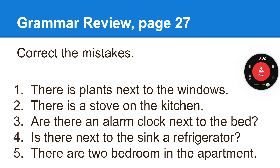'Are there an alarm clock next to the bed?' An alarm clock means there's one of them. Note 'an' — A-N is used when you're talking about something that has a vowel at the front, like 'an alarm.' So it should be 'Is there an alarm clock next to the bed?' Next: 'Is there next to the sink a refrigerator?' — the refrigerator is in the wrong place, it needs to move. It should be 'Is there a refrigerator next to the sink?' 'There are two bedrooms in the apartment' — there's two, so bedrooms should have an S. That's correct: 'There are two bedrooms in the apartment.'